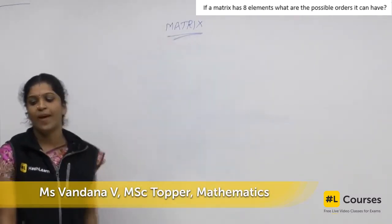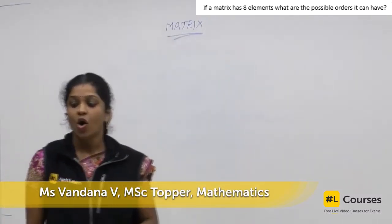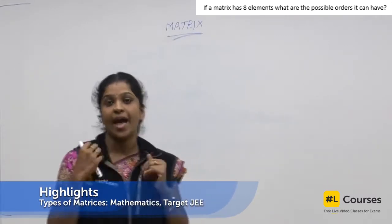Please read the question. What is the question? If a matrix has 8 elements, what are the possible orders it can have?